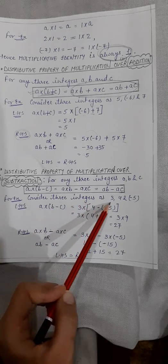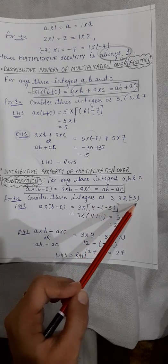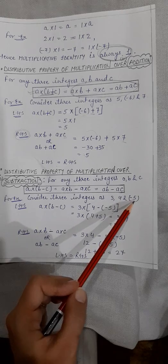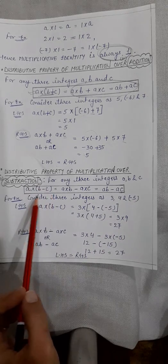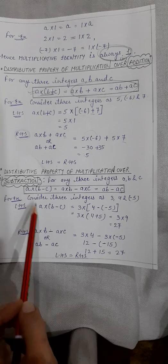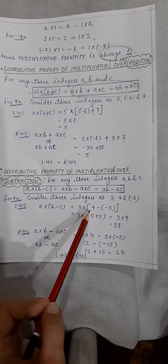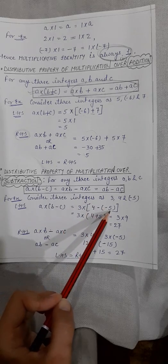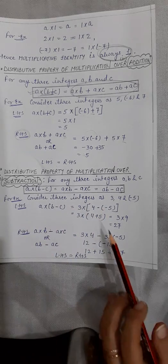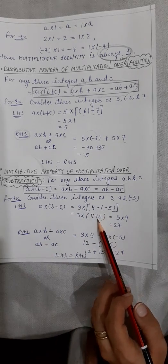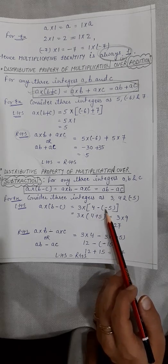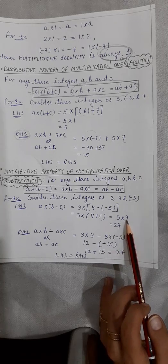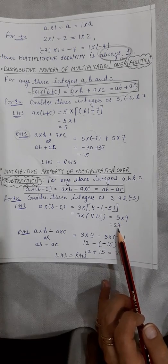Consider three integers: 3, 4, and minus 5. Take a as 3, b as 4, and c as minus 5. First prove the left-hand side: 3 into (4 minus (minus 5)). Convert the two signs — minus minus becomes plus — so 4 plus 5 is 9. Then 3 into 9 is 27.